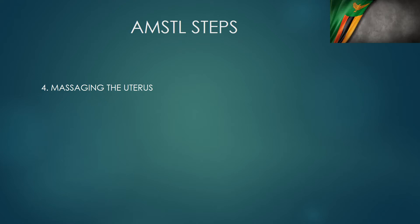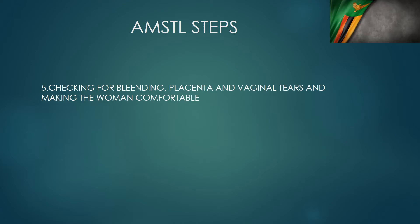After the placenta is delivered, the next step is to massage the uterus. We aid the uterus to have a sustained contraction, which will help reduce the risk of bleeding. Contraction of the uterus is the major thing that stops bleeding. So we massage the uterus after delivery of the placenta to aid contraction and reduce the risk of further bleeding. We then check for bleeding, check that the placenta is complete, and check if there are any vaginal tears. We make sure everything is okay, then make the woman comfortable — lying on her side and starting to breastfeed as soon as possible.